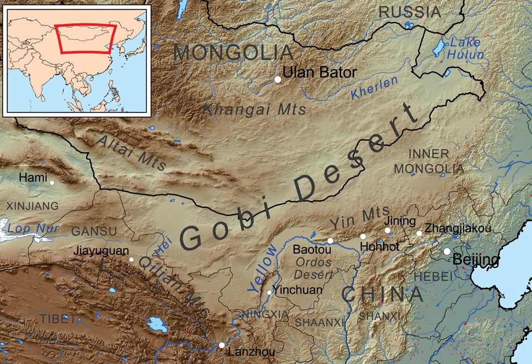The Tian Shan Range separates the Dzungarian Basin semi-desert from the Taklamakan Desert, which is a low, sandy desert basin surrounded by the high mountain ranges of the Tibetan Plateau to the south and the Pamirs to the west. The Taklamakan Desert ecoregion includes the desert of Lopp.